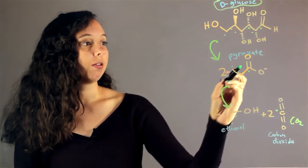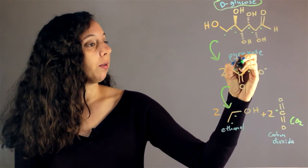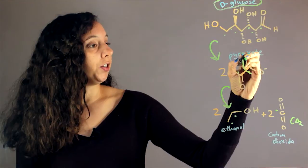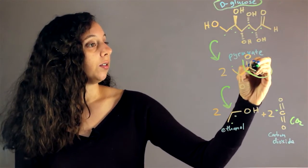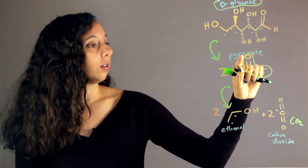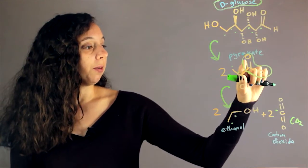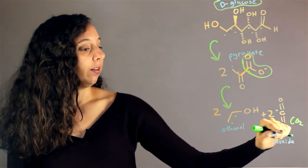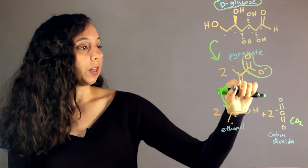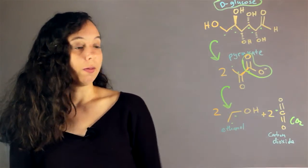If we look at our pyruvate molecule we can see that this carbon was bonded to two oxygens already. So what happened was these three atoms separated and formed gaseous carbon dioxide, and these two carbons with an alcohol ended up forming ethanol.